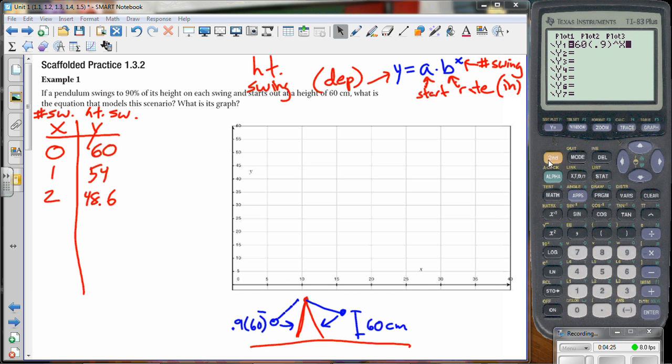Now, before I even get to the graph, I'm going to go to second table, and notice we get a table of values. I'm going to scroll up and you can look at the values. At 30 swings we're at like 2, 20 swings we're at like 8, 9. Let's start at 0. So at 0, 60, 1, 54, so these are the same values that we calculated, but it does it each time.